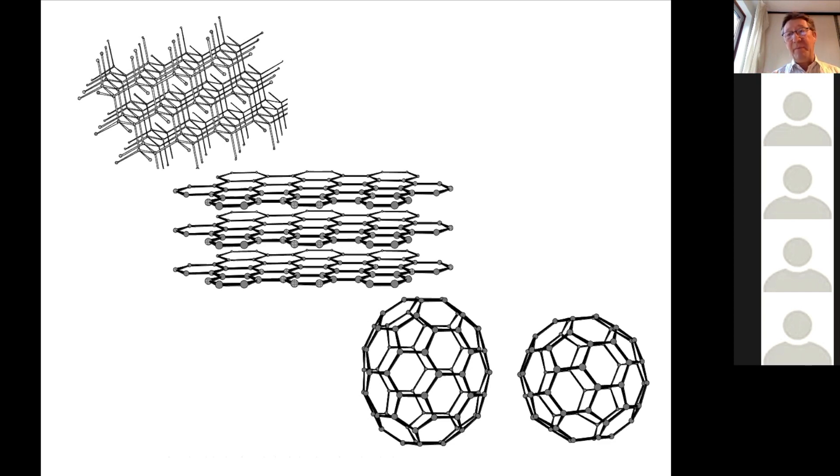Mr. Geim got the Nobel Prize for developing graphene. This is a visualization of a diamond lattice where we have all the sp3 carbons. Here we have graphite, so it's like infinite or very large layers of conjugated benzene rings. And there we have the buckyballs.